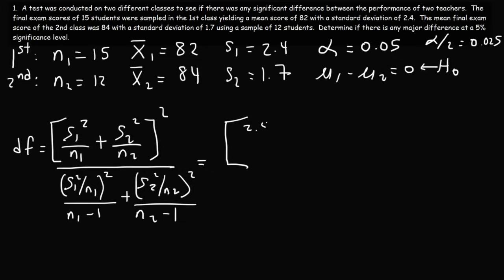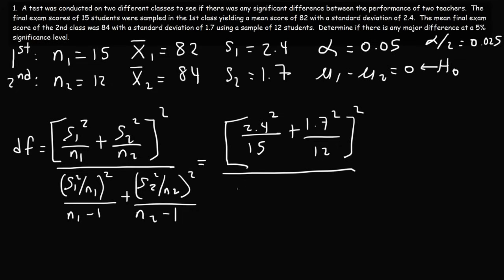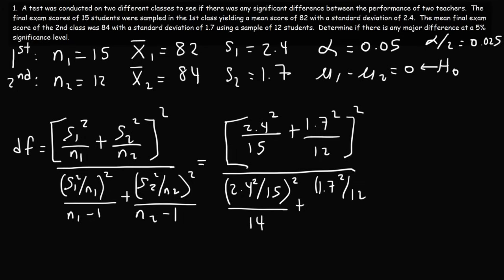Let's plug in the numbers: S1 is 2.4, N1 is 15, S2 is 1.7, N2 is 12. Starting with the numerator: 2.4 squared divided by 15 plus 1.7 squared divided by 12 gives 0.62483. Squaring that result gives the numerator value of 0.390417.